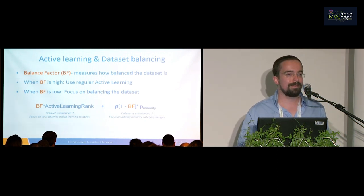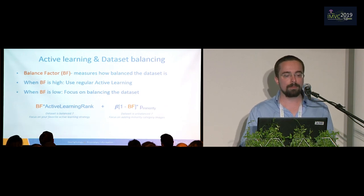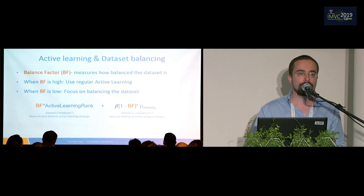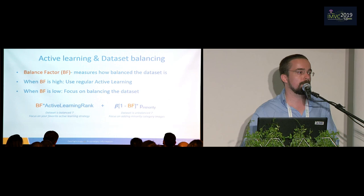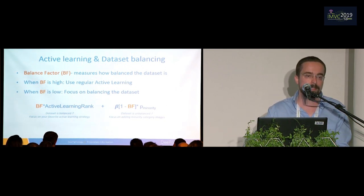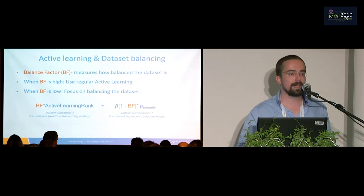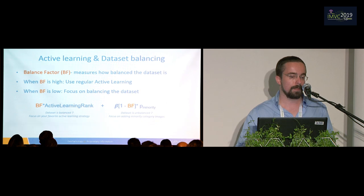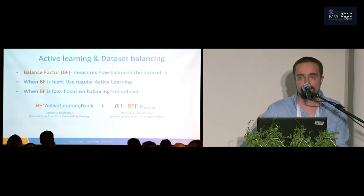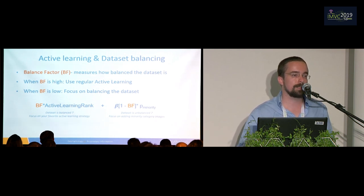Medical datasets are usually very unbalanced, and fortunately we can use active learning to dramatically make the annotation process more efficient. Let's say we're able to measure how balanced the dataset is — let's call that the balance factor. When the balance factor is high, we want to use regular active learning, meaning we want to fetch difficult images and annotate them. When the balance factor is low and the dataset is unbalanced, we want to focus on balancing the dataset. One way to do that: if we look at the minority category score of images, when that score is high it probably means the image belongs to the minority category, so fetching it would balance the dataset. We can think of a new ranking function with two terms: the first does regular active learning when the dataset is balanced, and the second focuses on balancing when the dataset is unbalanced. In between, we want to fetch difficult images that will also balance the dataset.